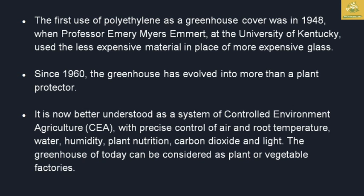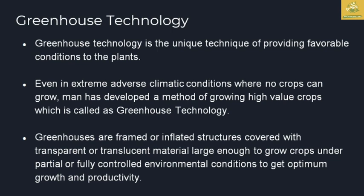After that, in 1960, greenhouse technology evolved for greater plant production. It is now known as Controlled Environment Agriculture (CEA), where precise control of air and root temperature, water and humidity, plant nutrition, carbon dioxide, and light are maintained in these protected structures. The greenhouse is also known as a plant or vegetable factory, where every environmental condition is kept optimum for the plants.